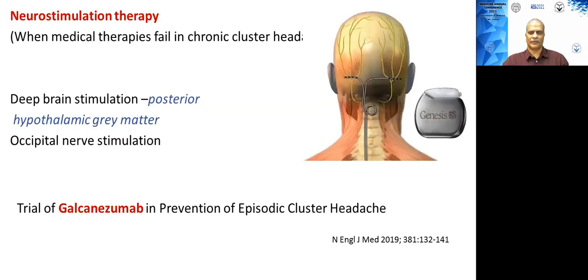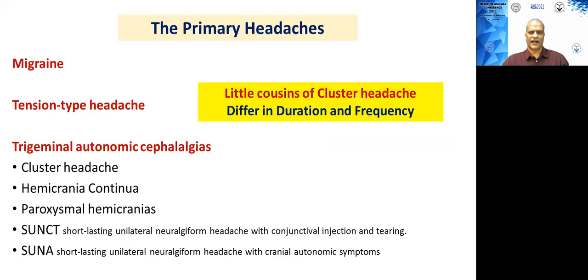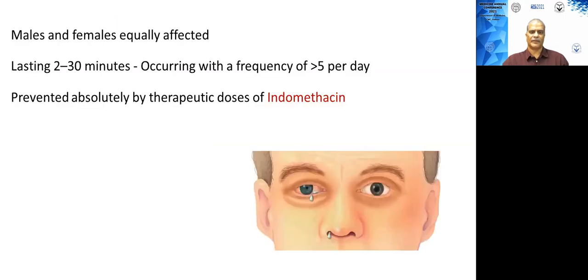Other modalities for cluster headache include deep brain stimulation targeting the posterior hypothalamus, and CGRP inhibitors have also been tried. Two other TAC variants — hemicrania continua and paroxysmal hemicrania — are important to recognise because both are very responsive to indomethacin, and are therefore called indomethacin-responsive headaches.